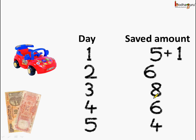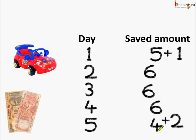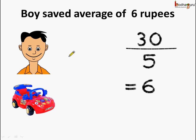On the third day he saved rupees 8, which means he saved 2 rupees extra. This 2 rupees gets adjusted on the fifth day, because on the fifth day he was able to save only 4 rupees. This 2 moves to the fifth day, and he was able to save 30 rupees in 5 days. Adjusting this way, he ensured the total amount of 30 was saved in 5 days. This means the boy saved an average of 6 rupees per day.